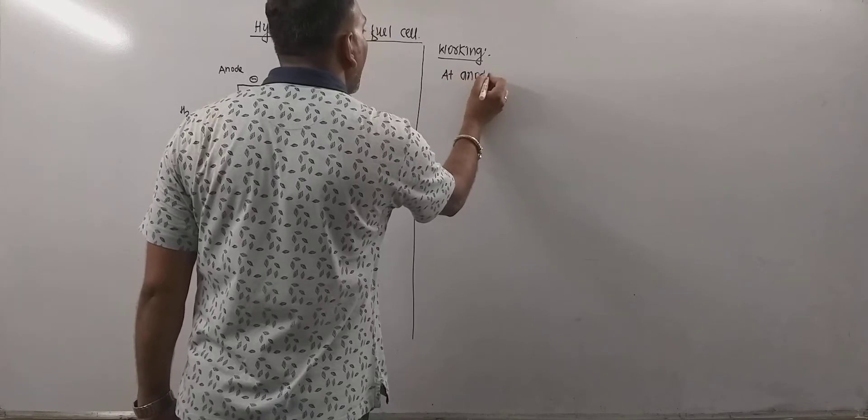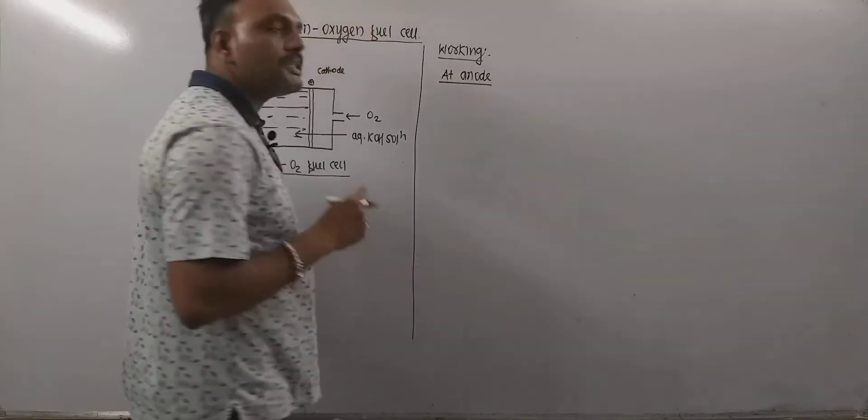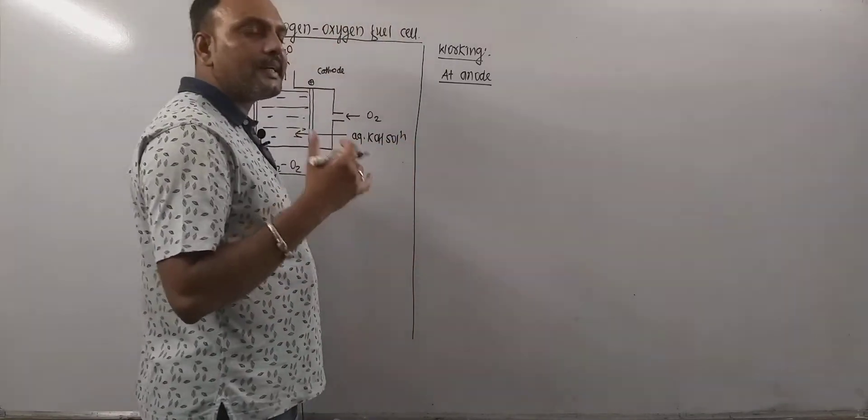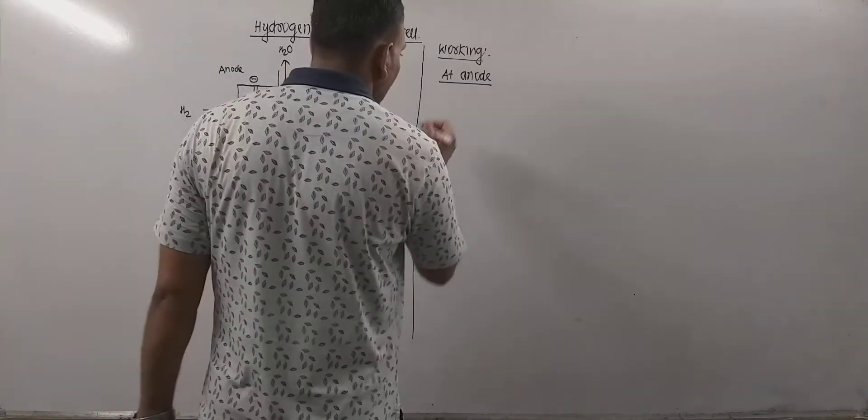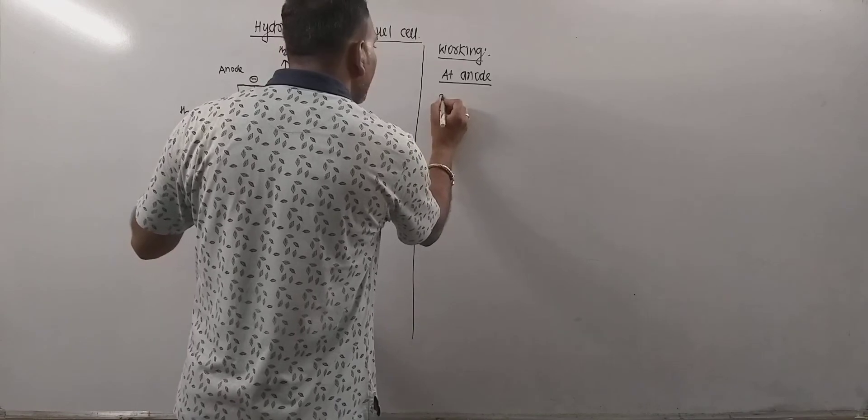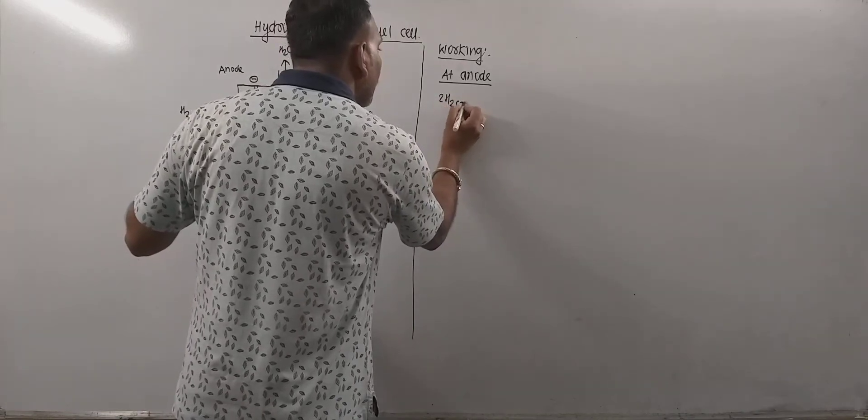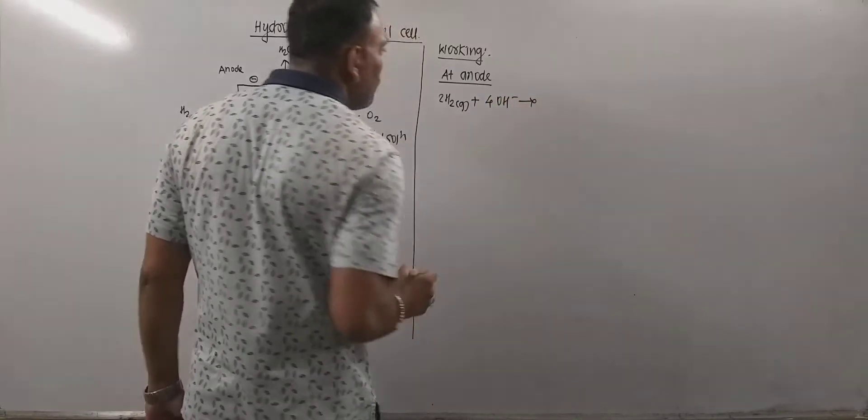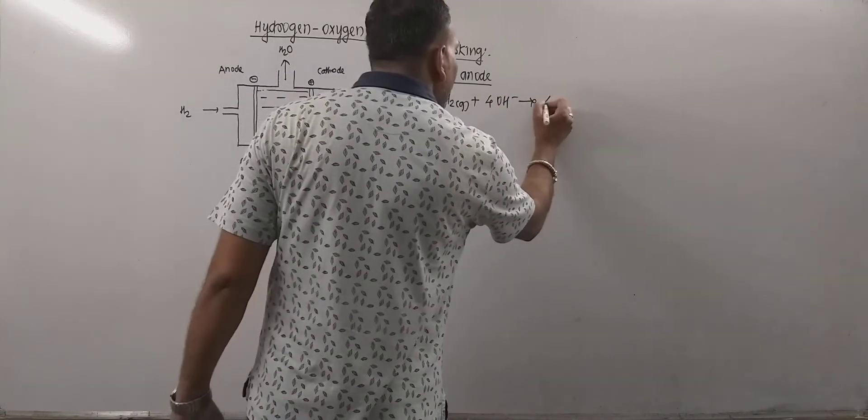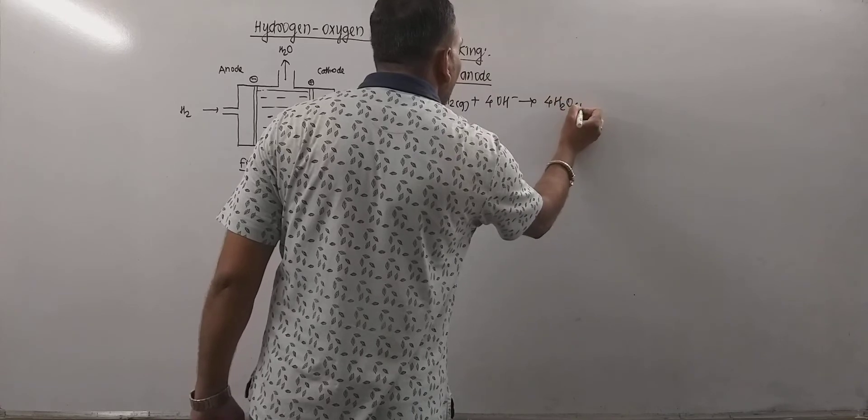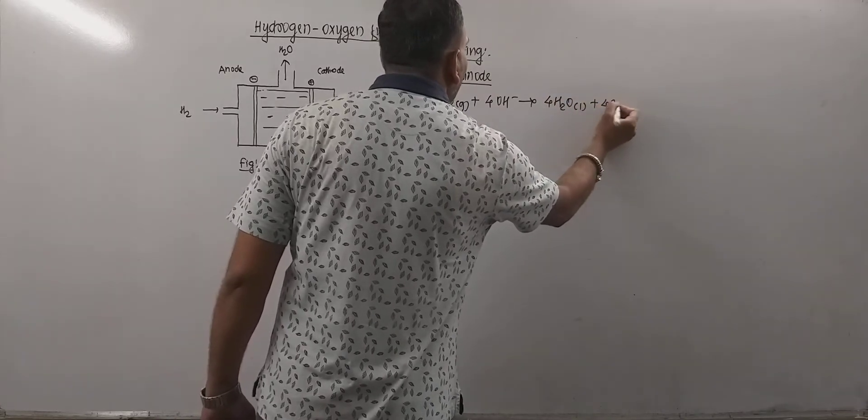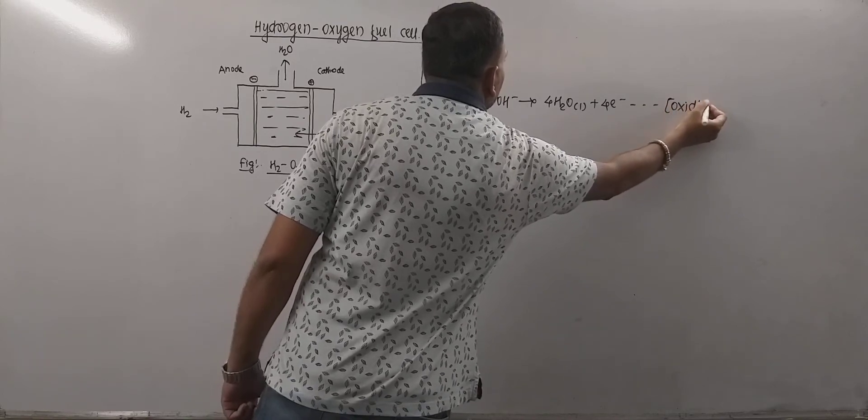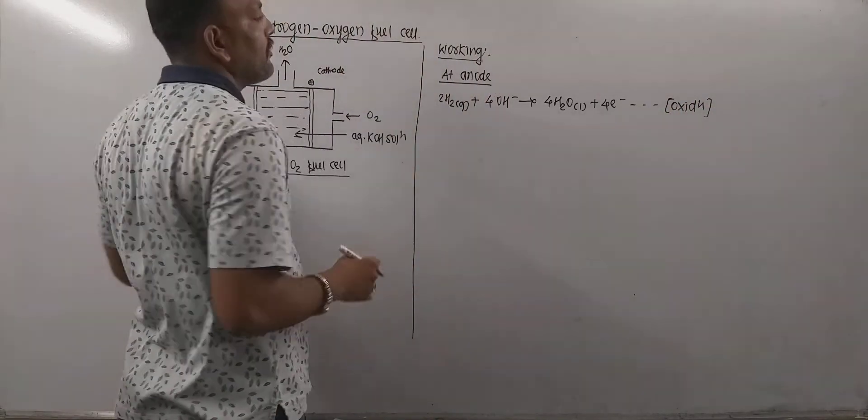So at anode, anode is oxidation half cell. Electrode at which oxidation takes place is said to be anode. So at anode what we are doing? We are bubbling the hydrogen gas and bubbled hydrogen gas undergoes combustion. And this leads to the formation of water and electrons are liberated in the process of oxidation. This happens exactly at anode.